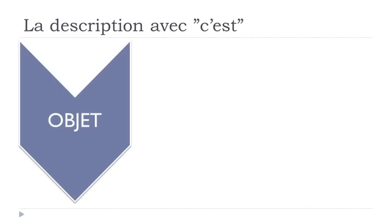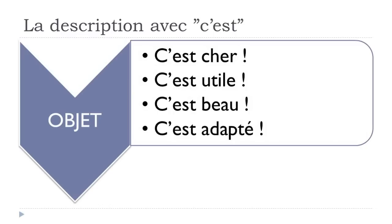To describe an object (un objet): 'c'est cher' — it's expensive. 'C'est utile' — it's useful. 'C'est beau' — it's beautiful. 'C'est adapté' — it's adapted. Remember, all these adjectives are at the masculine form — as I said previously.